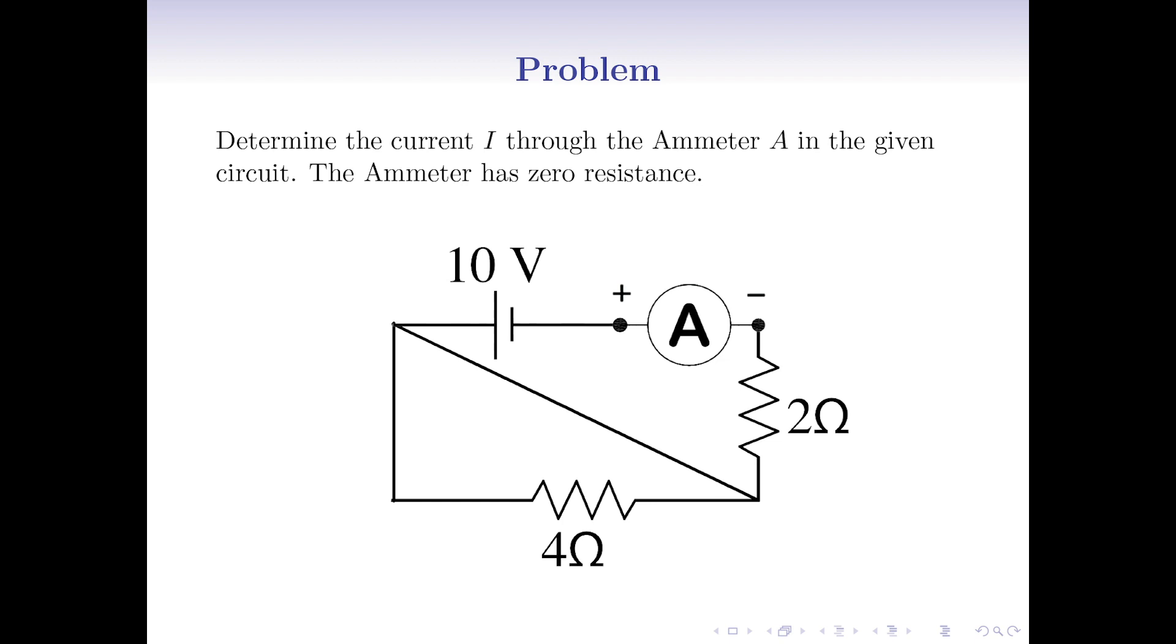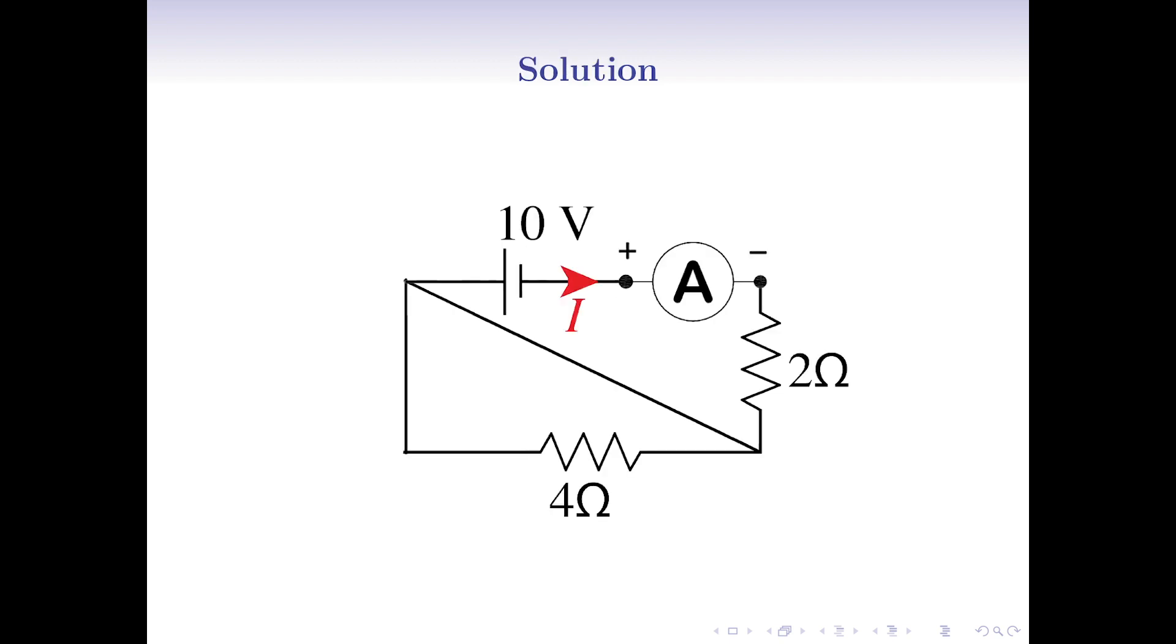Determine the electrical current passing through the ampermeter in the given circuit. The ampermeter has zero resistance. Basically, we need to calculate what number the ampermeter shows. This current labeled by I in the picture.